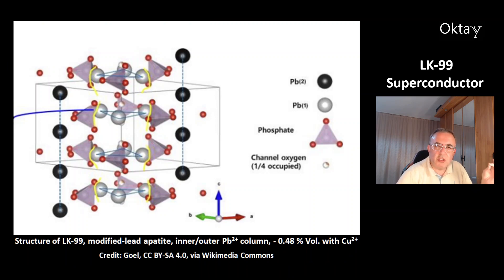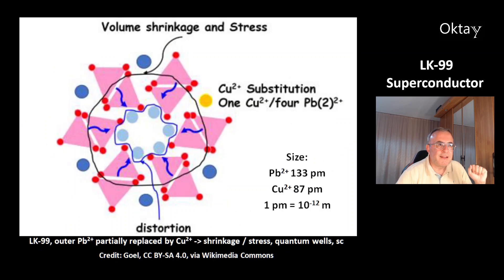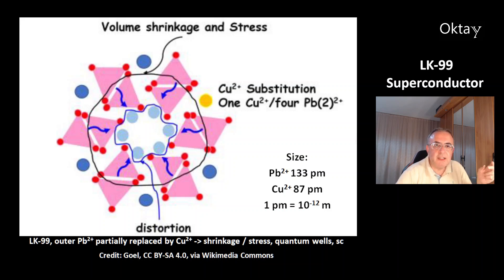This is the structure of LK99. It is a modified lead apatite with inner and outer columns of lead ions. Experimental measurements showed that doping with copper ions gives a smaller volume by minus 0.48%. The substitution happens at the outer lead ions, not the inner lead ions. This causes a shrinkage and stress, which produces quantum wells and makes LK99 a superconductor. The reason is that copper ions are significantly smaller than lead.